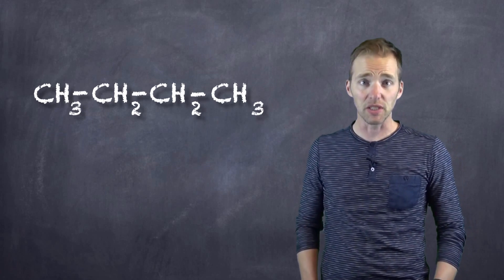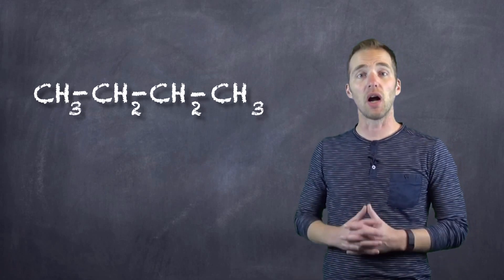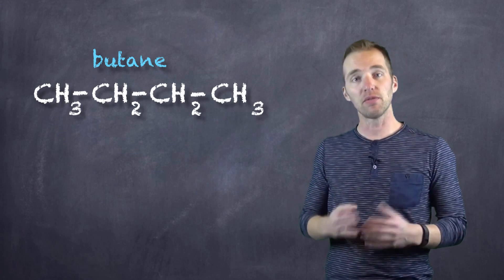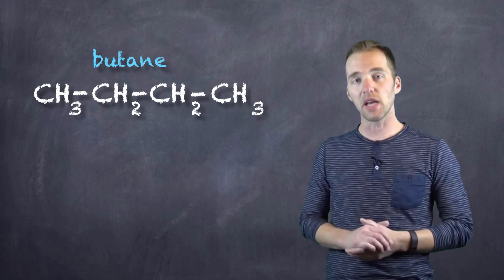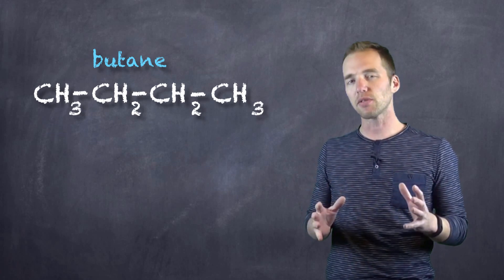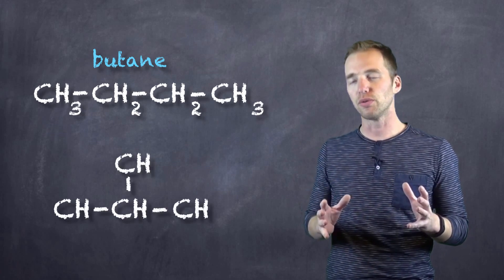And this structure is the structure of butane. So it's just a linear hydrocarbon, four carbons, and then there's going to be ten hydrogens branched off of it. And if you thought a little bit outside this box, maybe you drew this.